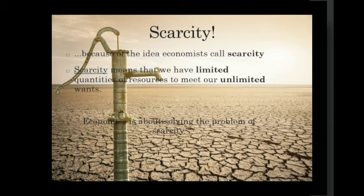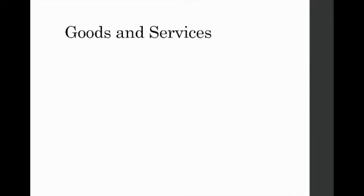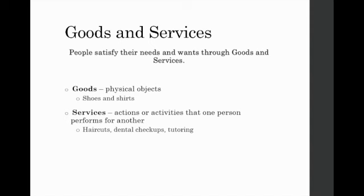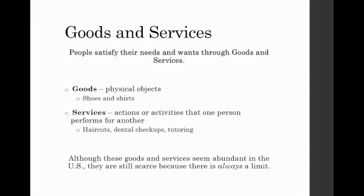Economists are basically all about trying to solve the problem of scarcity and meet these wants and needs through goods and services. Goods are physical objects - shoes, shirts, everything you're wearing, Louis Vuitton. Services are actions or activities like haircuts, dental checkups, teaching. Whereas it might seem there is an abundance of these goods and services at a mall, if anything from the 2020 toilet paper shortage can teach us, those shelves are not always full.